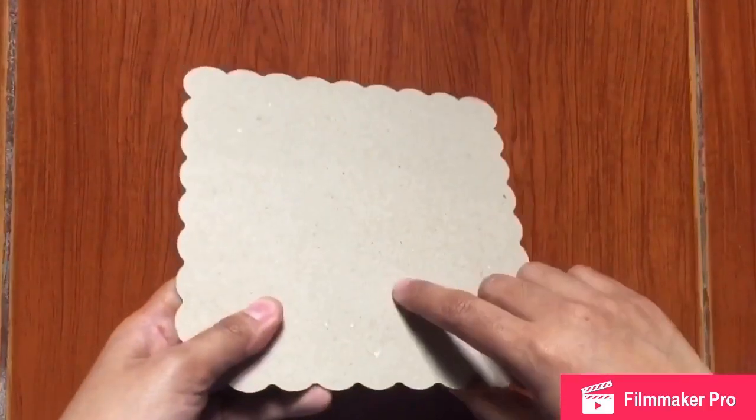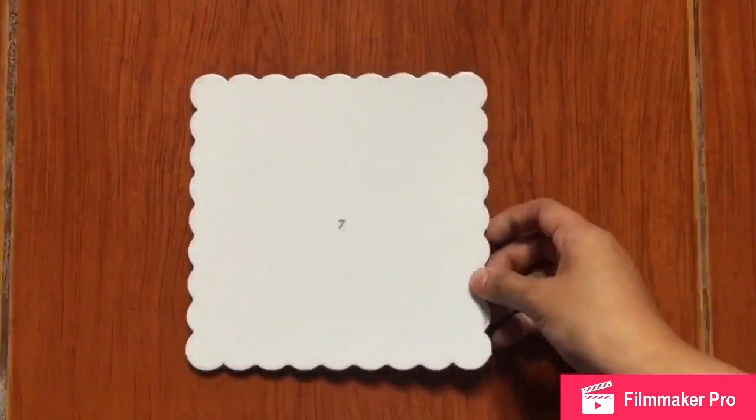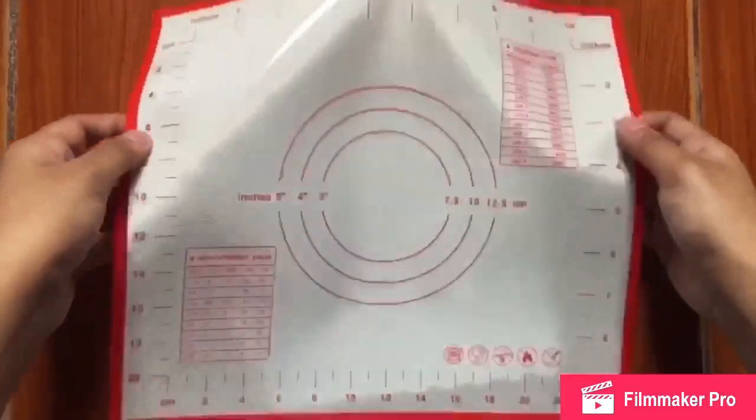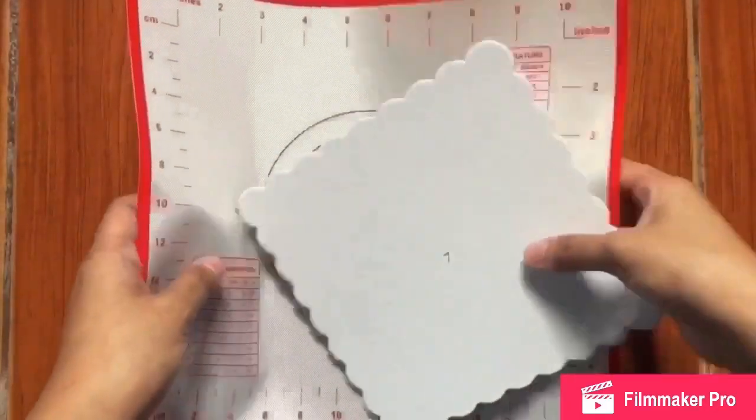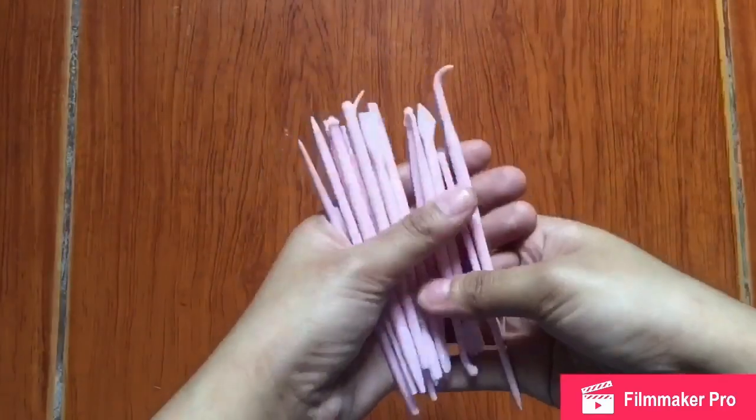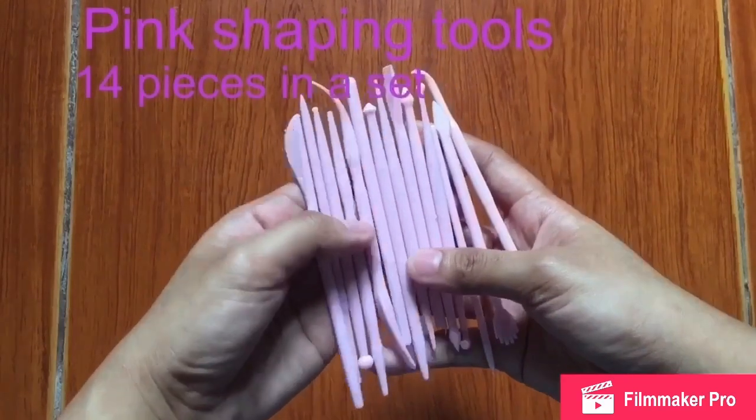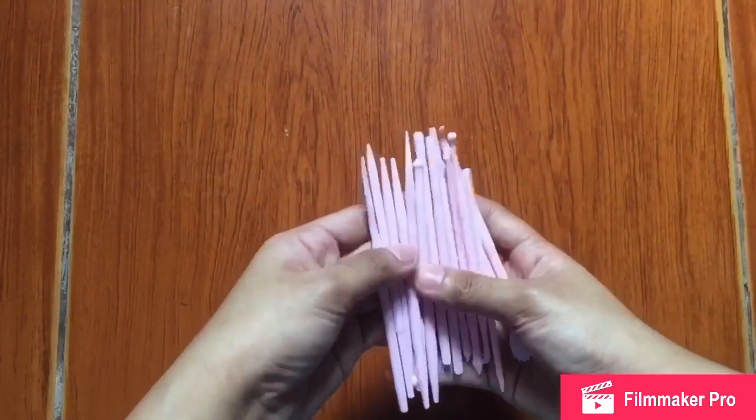So you can use this cake board or this silicone type. It actually depends on you guys. And then the next one that I do have here are the pink tools that I use. It's actually made of plastics.